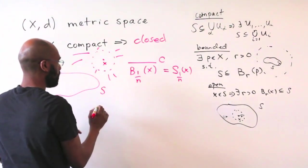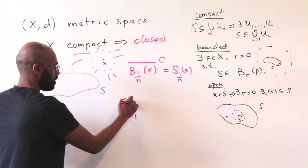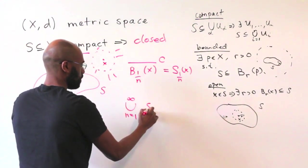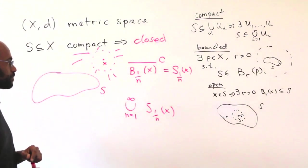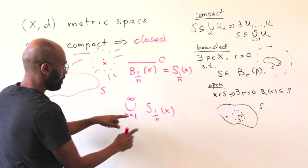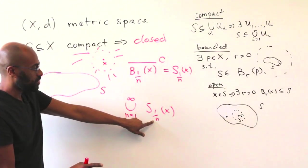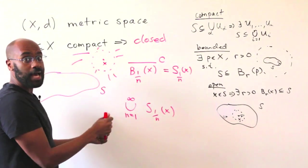Okay, great. So if we increase N, so we take the N equals 1 to infinity and take the union of all of these things, what would we get? Well, these are the points that are at least 1 over N away from X for some N.